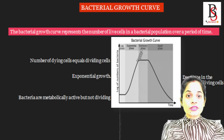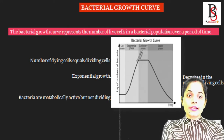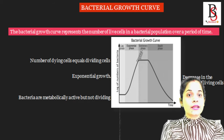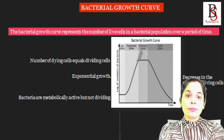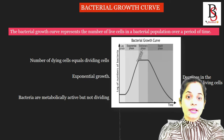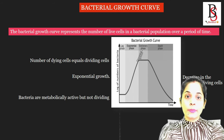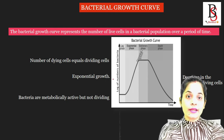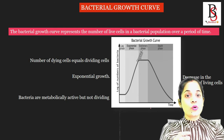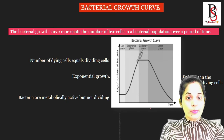Before going into diauxic growth, let's have a look at the bacterial growth curve. We can know the bacterial growth rate by plotting a graph of number of live cells of bacteria over a period of time — that represents the bacterial growth curve. In the bacterial growth curve we observe four phases. The first phase is known as the lag phase. In the lag phase, though the bacteria are metabolically active, they do not divide.